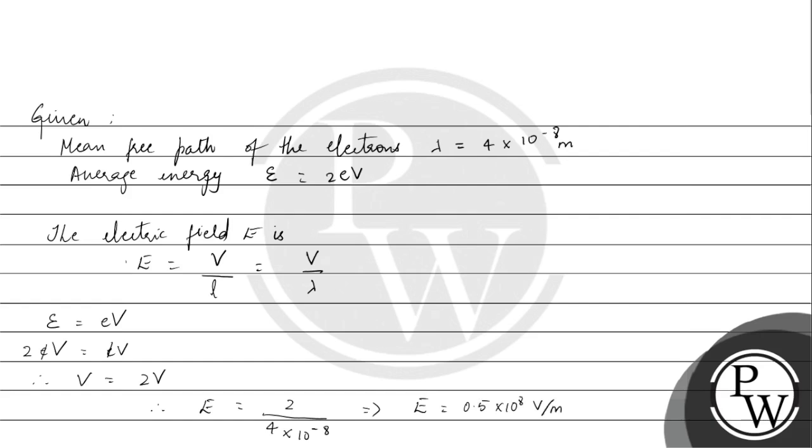So therefore we can say E is equal to 5 into 10 to the power of 7 volt per meter.